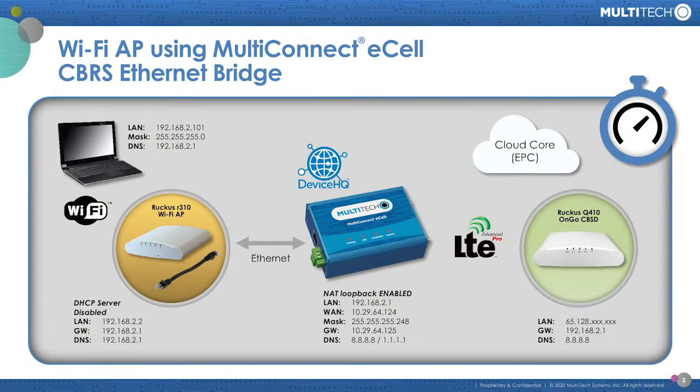It's a CAT-12 modem supporting CBRS OnGo. The way we've connected it up with the Wi-Fi access point: we've got a computer using Wi-Fi, perhaps like you're using right now, connected to a Ruckus R310 enterprise-grade Wi-Fi AP. And then we're using the Ethernet connection to connect that directly to the eCell.